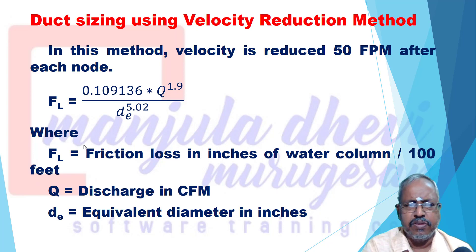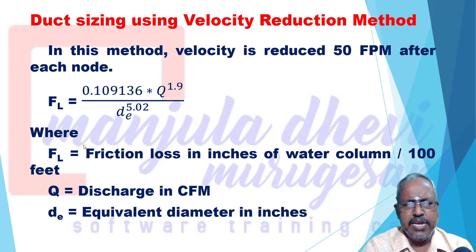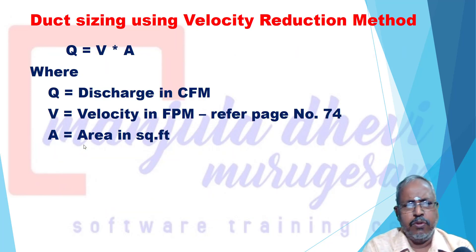The friction loss formula is: FL = 0.109136 × Q^1.9 / DE^5.02, where FL is friction loss in inches of water column per 100 feet, Q is discharge in CFM, and DE is equivalent diameter in inches. Also, Q = V × A, where V is velocity in FPM and A is area in square feet.